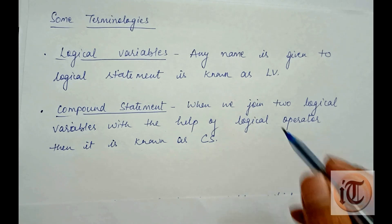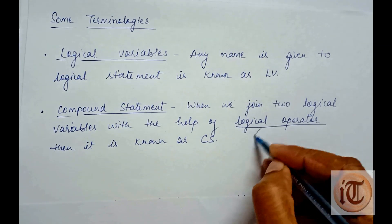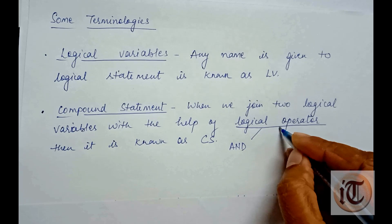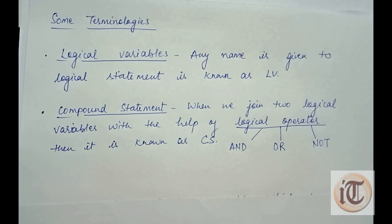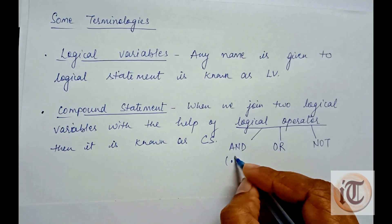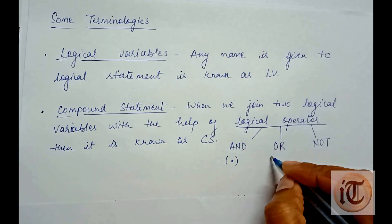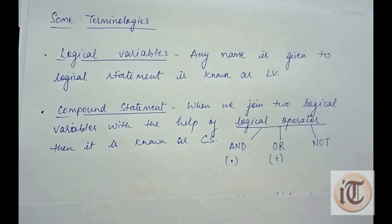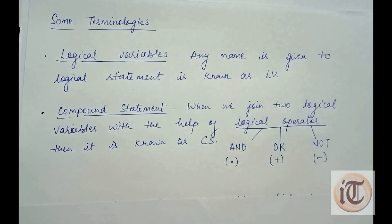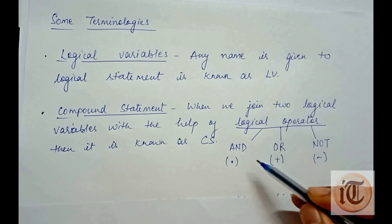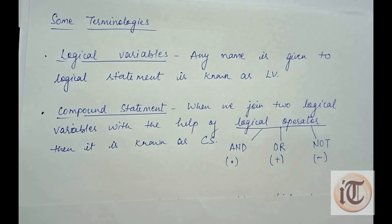The logical operators can be AND, OR, and NOT — there are three basic types. AND can be denoted with the dot operator, OR with the plus operator, and NOT with the tilde sign. When we join two logical variables with any of these logical operators, that statement is called a compound statement.